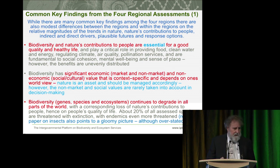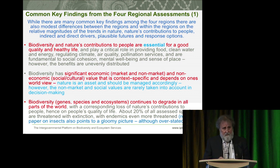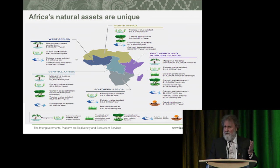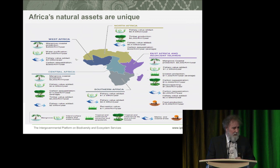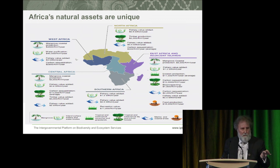Biodiversity at all levels continues to degrade in all parts of the world. About 20% — this comes from the IUCN Red List — 20% of all assessed species are threatened with extinction, with endemic species even more threatened. Looking at Africa, we examined how valuable mangrove systems are, how valuable fisheries are, carbon sequestration, erosion protection. These numbers are somewhat uncertain, but the main point is these natural assets have real value that needs to be taken into account when politicians make decisions.